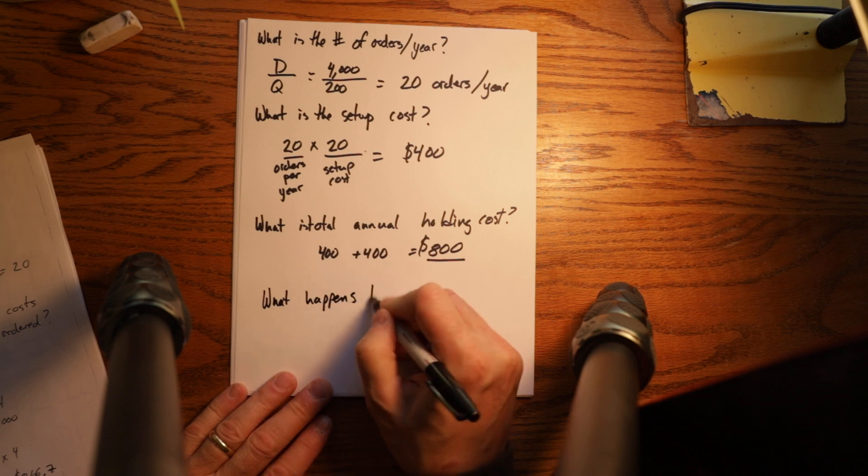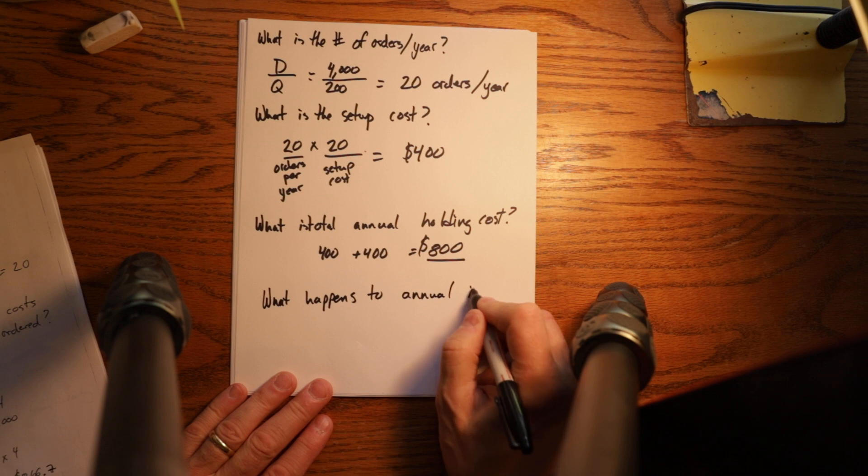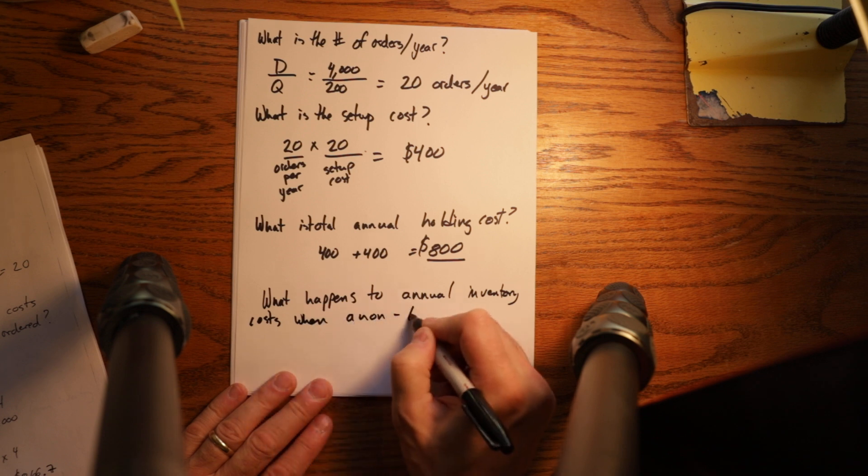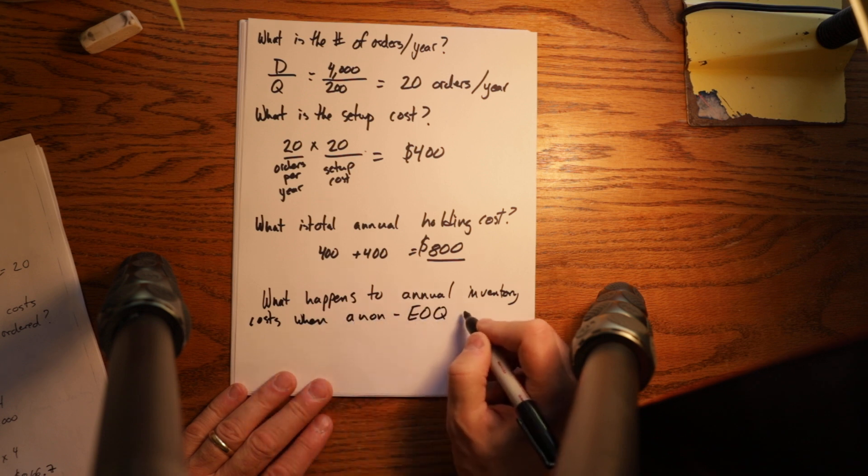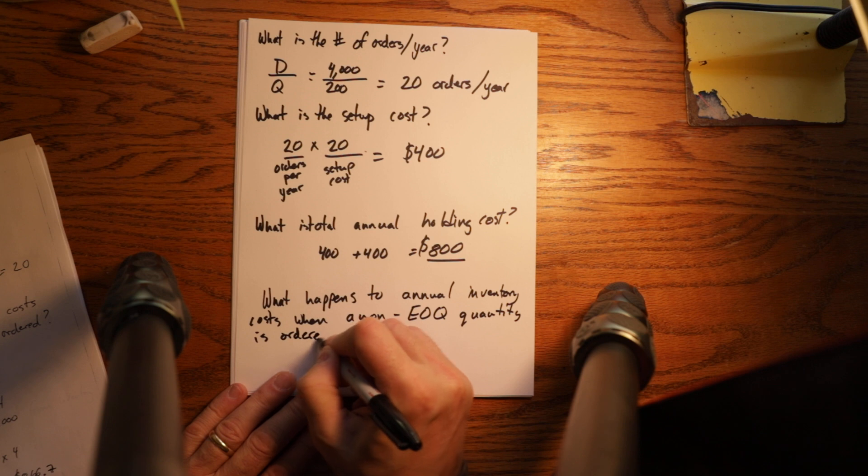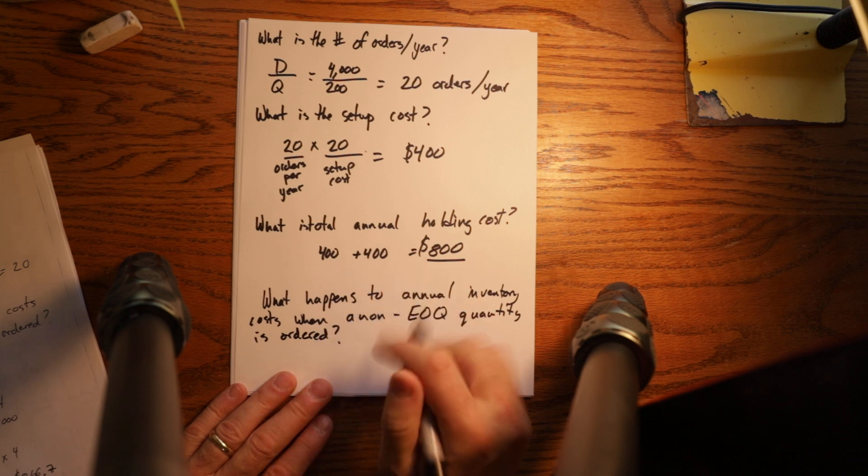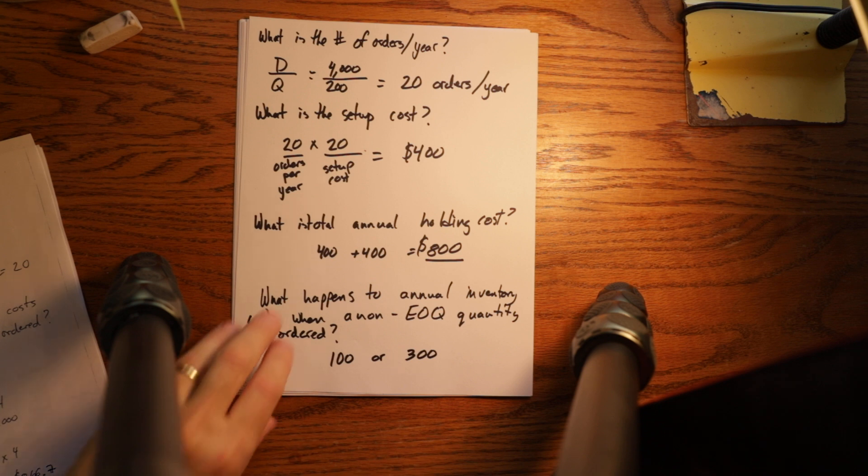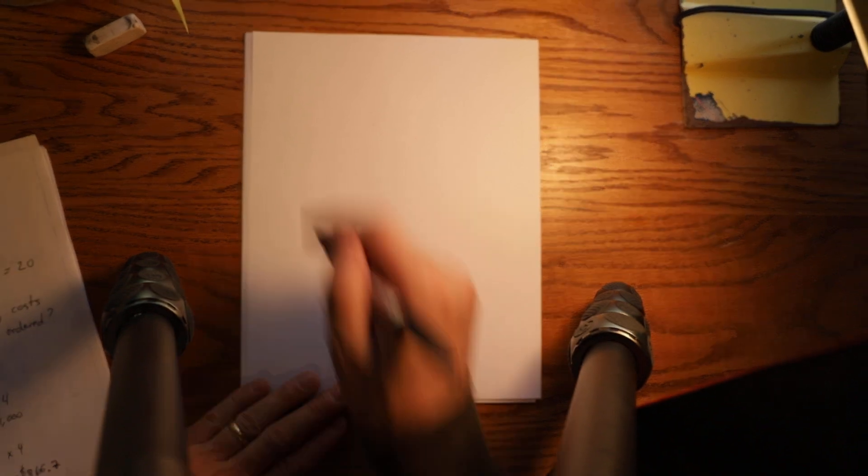What happens to annual inventory costs when a non-EOQ quantity is ordered? Say 100 or 300. So if we know that 200 is the optimal order quantity, but what happens if we order a non-optimal quantity? So let's look at 100.